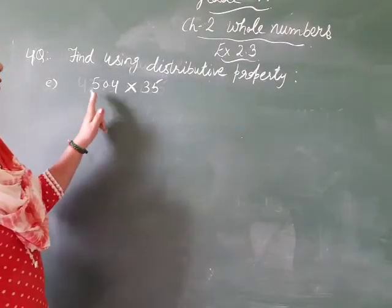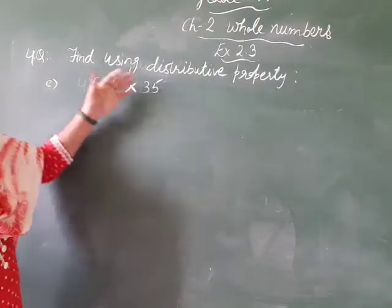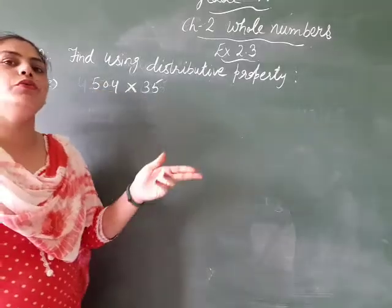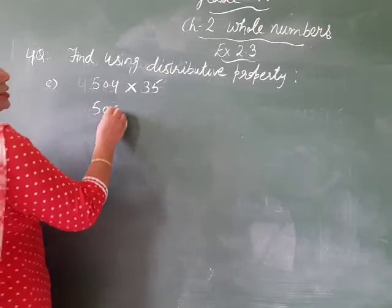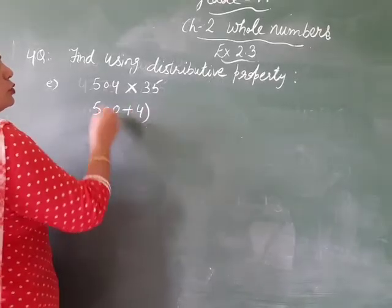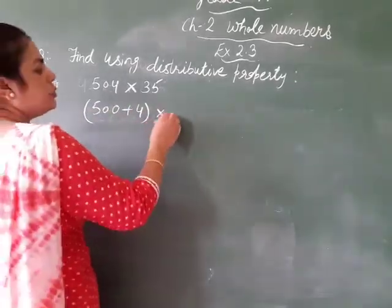So, now we have 504 into 35. Here 504 can easily be split as 500 plus 4. We split it in the sum of 2 numbers into 35.